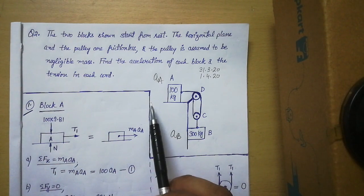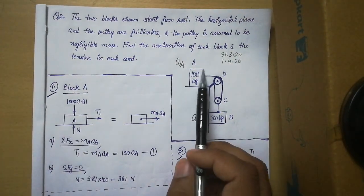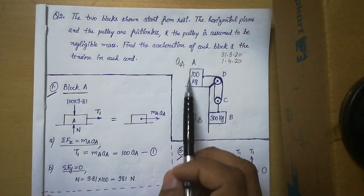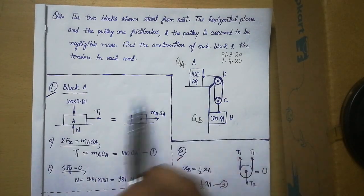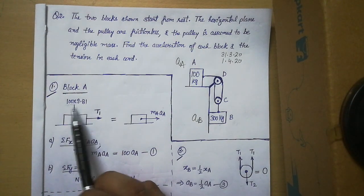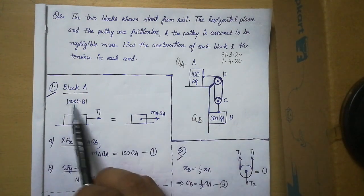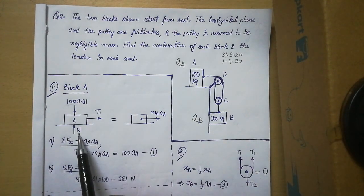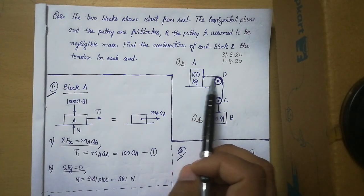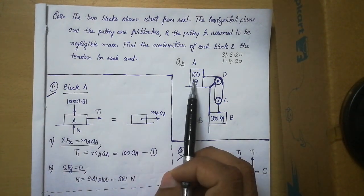Let us first talk about block A. In the free body of block A we first represent its weight, shown here in the downward direction — 100 multiplied by 9.81 gives the weight. On this block there will also be a normal pressure acting upward against that weight, shown at the bottom. There is one more force acting along the chord towards the right, called tension T1. So there are three forces total acting in the free body of block A.